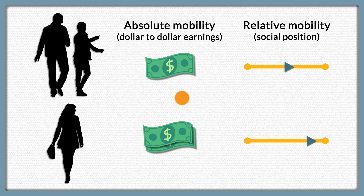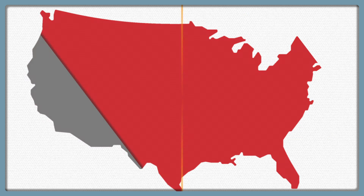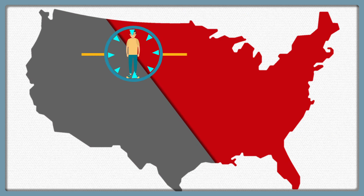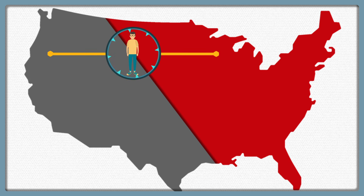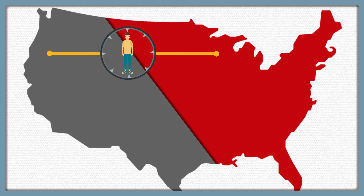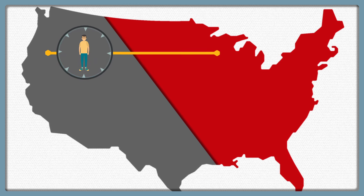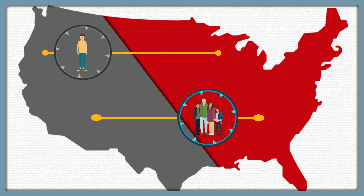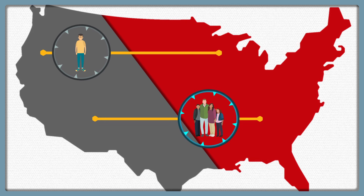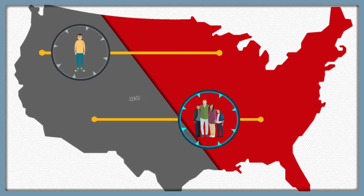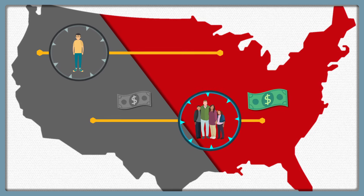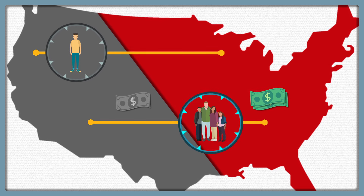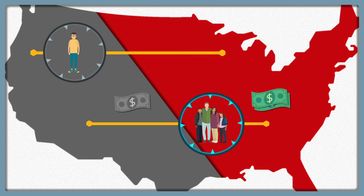In the United States, men's mobility compared to their father's has slowed because of declining opportunities in some traditionally male occupations. But family mobility has stayed more stable because of the wages of women entering the workforce. On average, most families' absolute earnings have increased over time because of the country's economic growth.